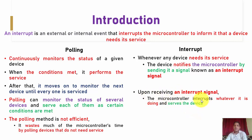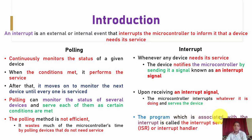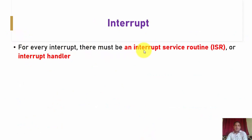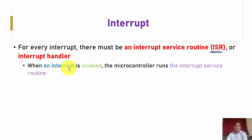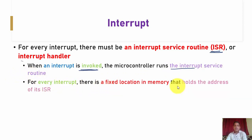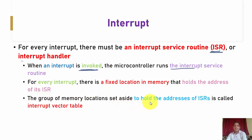Upon receiving the interrupt signal, the microcontroller interrupts whatever it is doing and services the device. The program associated with an interrupt is called the interrupt service routine, or ISR. For every interrupt, there must be an ISR — also called the interrupt handler. When an interrupt is generated, the microcontroller runs this ISR. For every interrupt, there is a fixed memory location that holds the address of the ISR, and this group of memory locations is called the interrupt vector table.